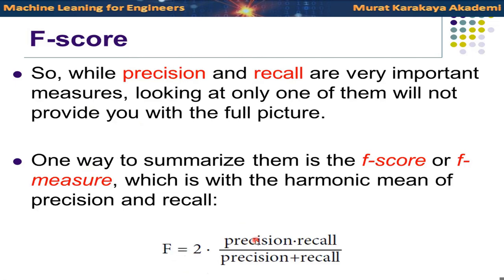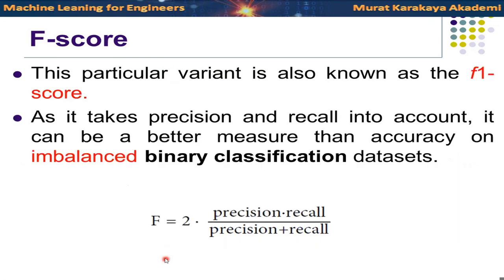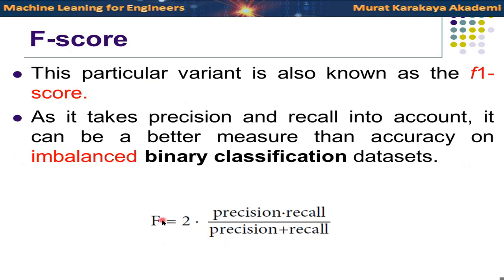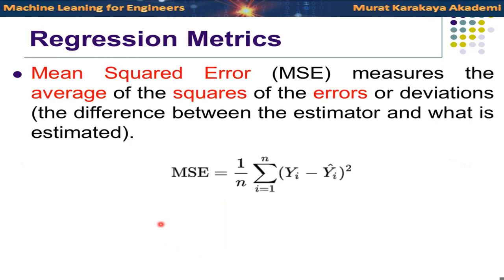The F1 score is the harmonic mean of precision and recall. Calculate precision and recall, then apply the F1 formula — the harmonic average — to find the F1 score. F1 provides a balanced metric combining both precision and recall for binary classification. You can use precision, recall, F1, and accuracy together to compare your results.